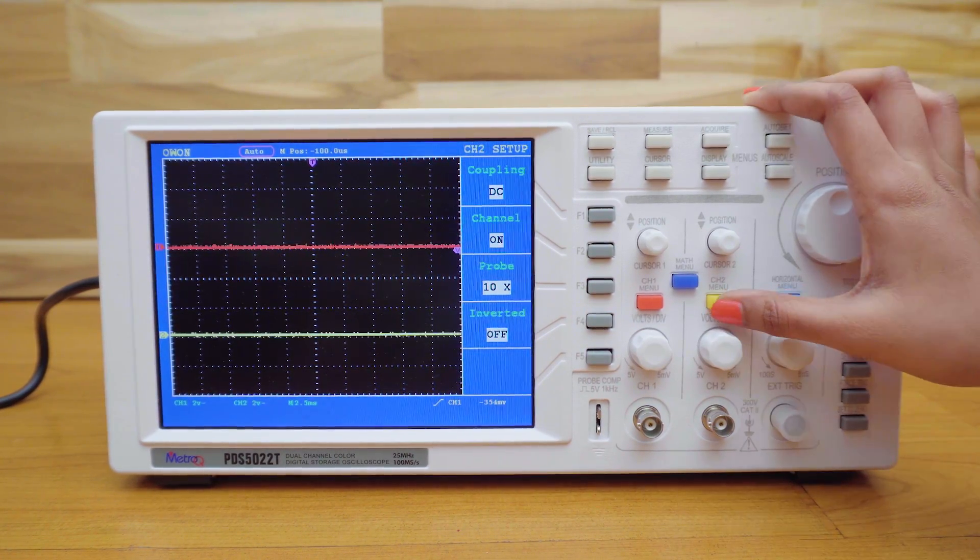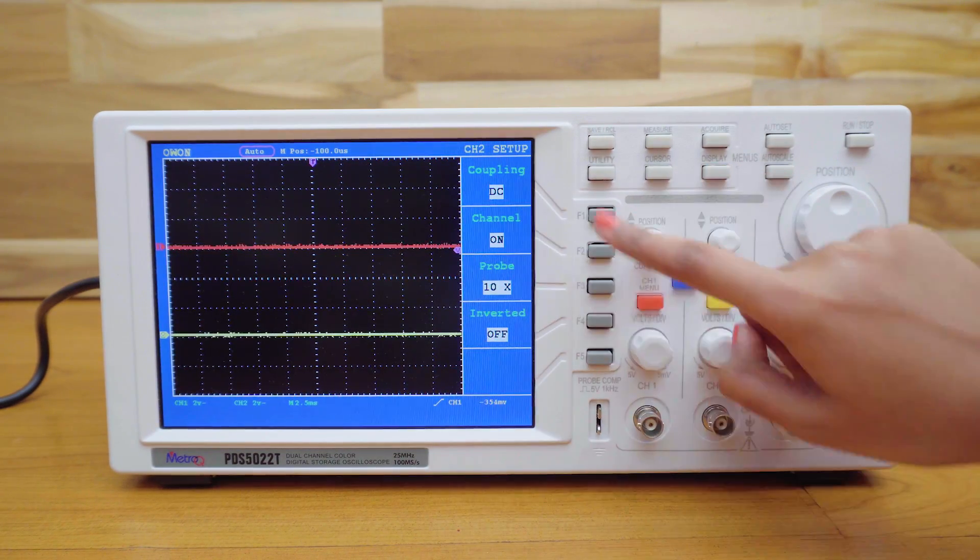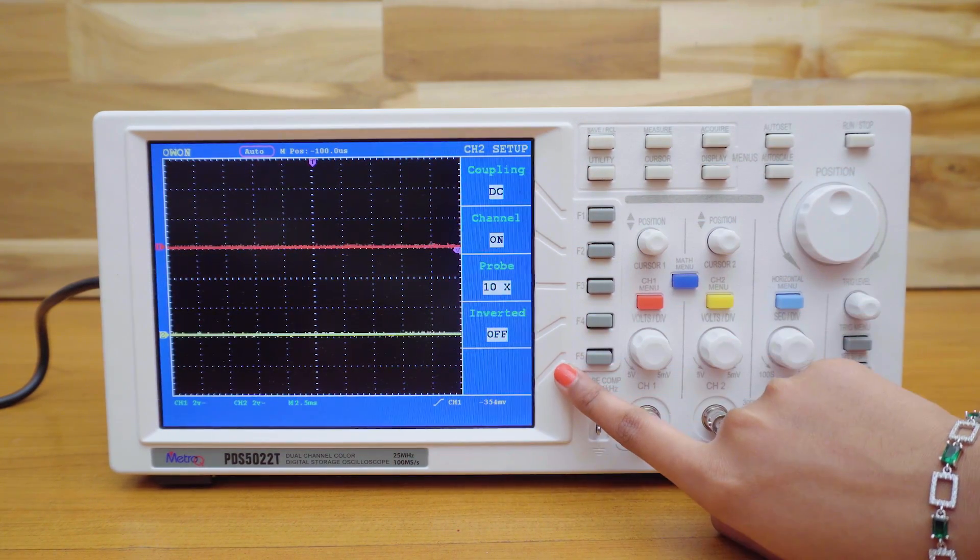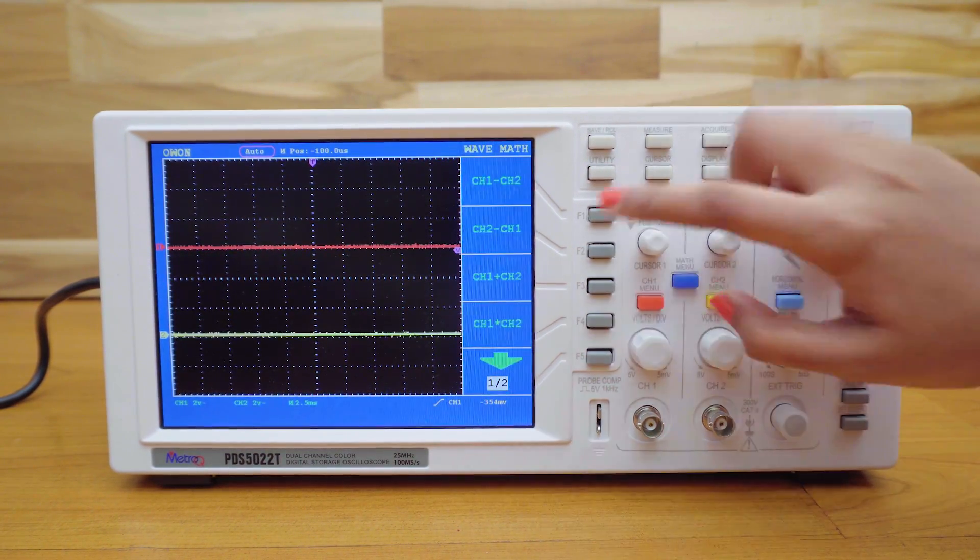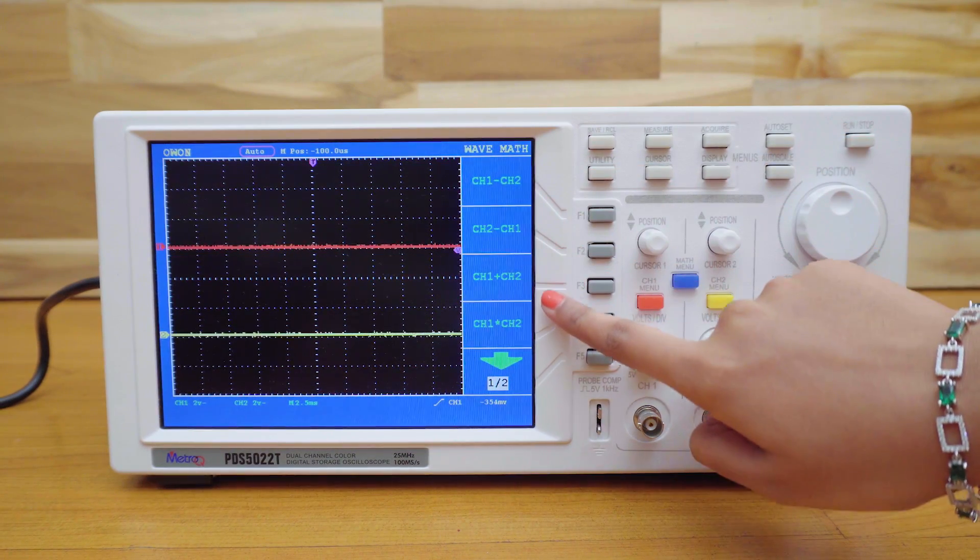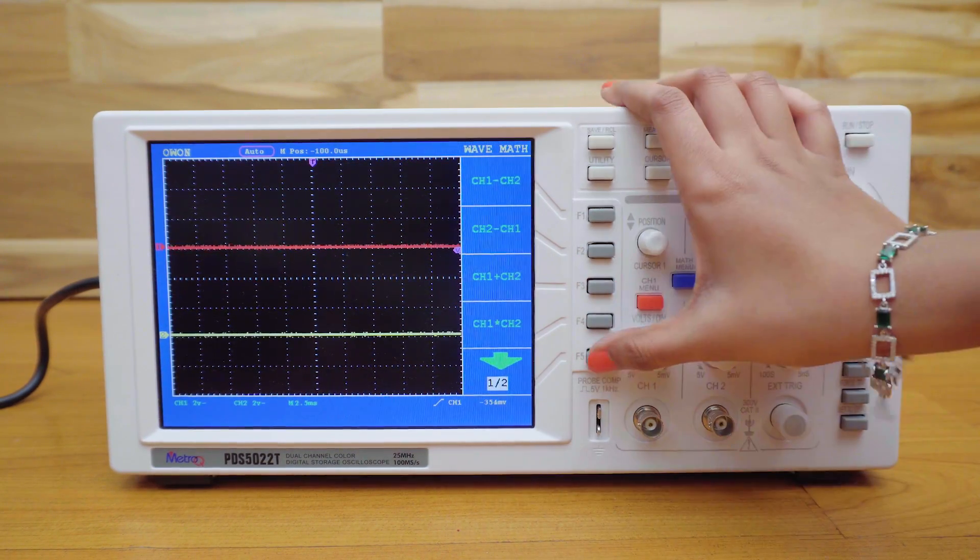The channel 2 menu is similar to that of channel 1. There is also a math menu, which performs various operations on your signals like addition, subtraction, multiplication, division.